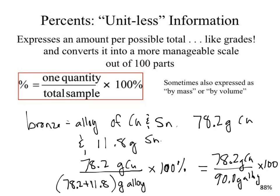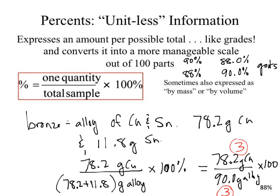Possible answers might include 86.88, 87, 87.0, 86.9, 86.8. We have to go back to our sig figs. 78.2 has three sig figs; 90.0 has three sig figs, which means the answer must have three sig figs. So our answer comes out to 88.0%... well, let's work through the actual numbers.